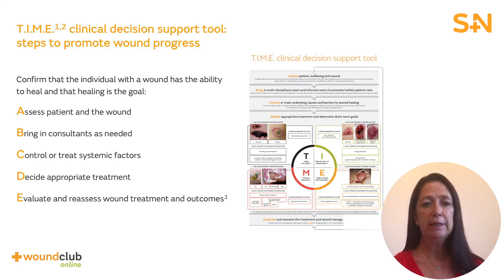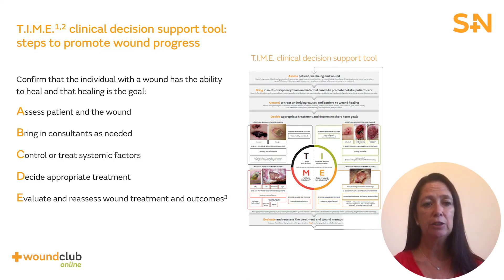They used an A, B, C, D, E approach. It is important to identify that the patient has the ability to heal and that healing is the goal. If healing is expected, it is important to assess the patient, their environment and the wound. Next, bring in specialists as needed to control or treat systemic factors such as nutrition, diabetes, vascular compromise or others. Decide appropriate treatment by using the TIME acronym to identify and prioritise barriers to healing. Lastly, during the course of care, evaluate the results of treatment.